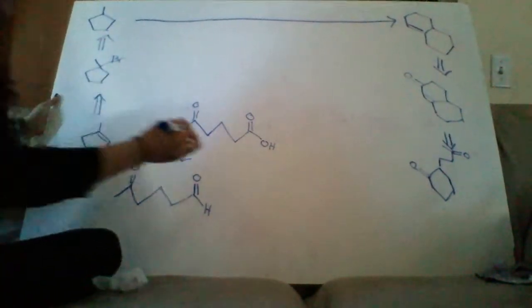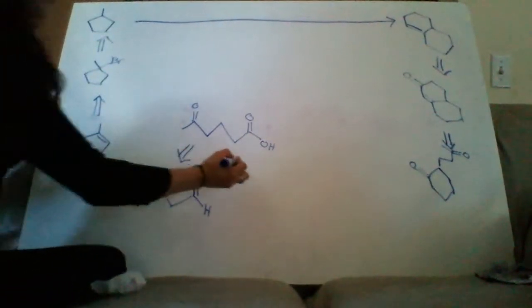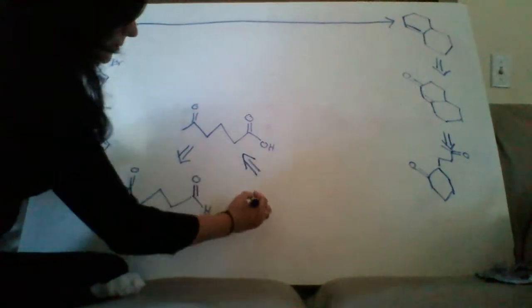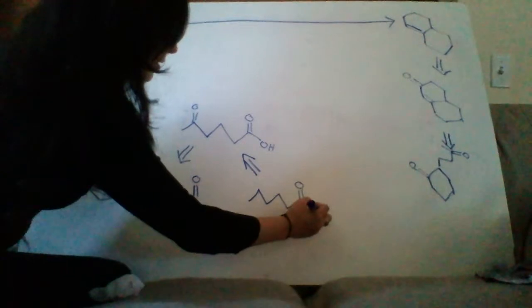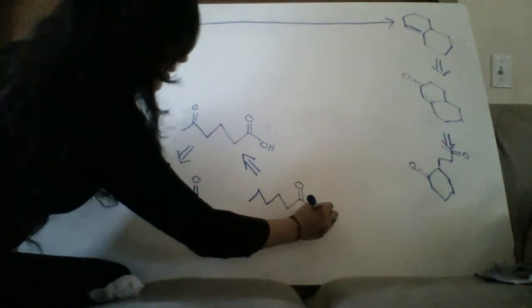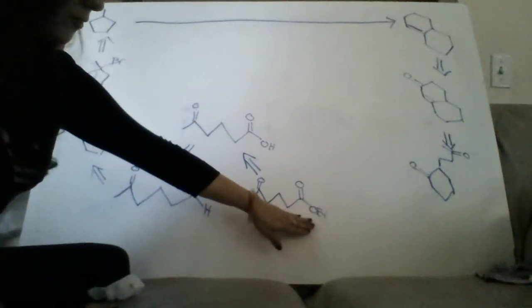And then from there I can turn this OH into a better leaving group by making that an ester. So I'll react that with ethanol, turn that into an ester and now I have a good leaving group.